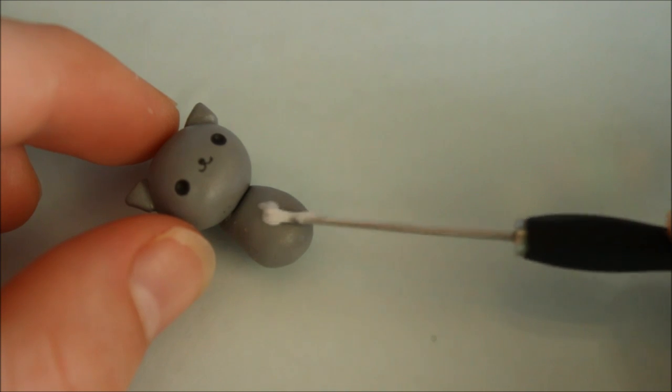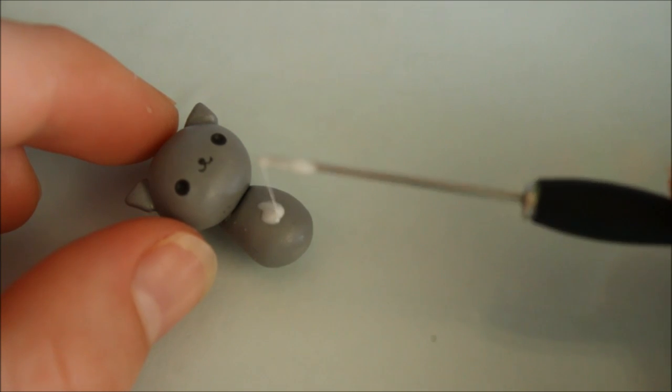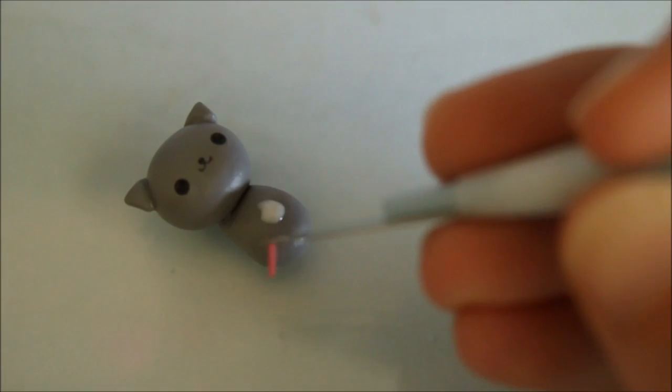Now I'm adding some liquid clay to Shadow's tummy which will help secure the ball of yarn. Also add a small piece which will hang down and then attach the yarn.